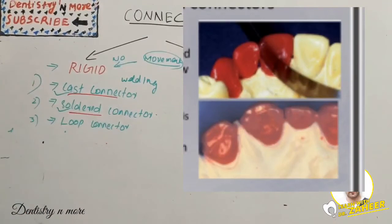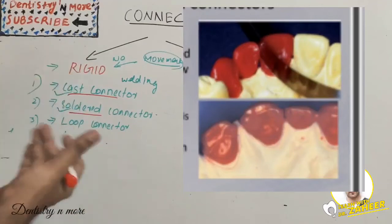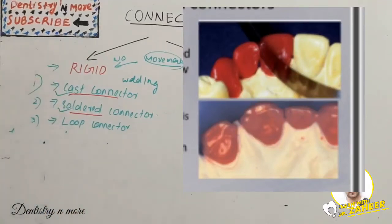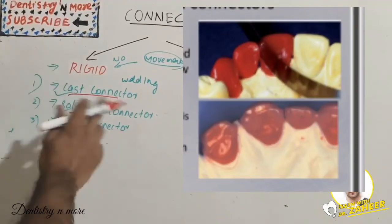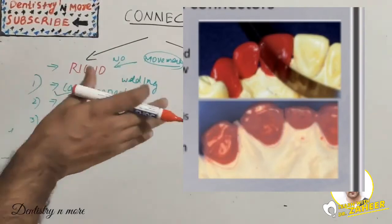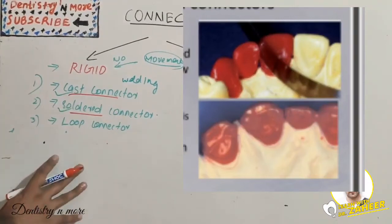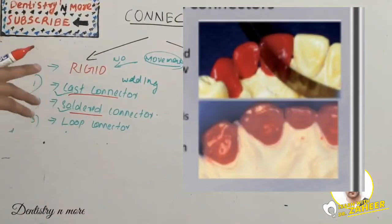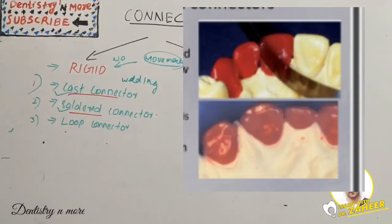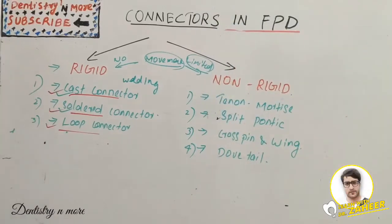In a soldered connector, the metal is not melted during soldering but must be thoroughly wettable by the liquefied solder. Dirt or oxides on connector surfaces can reduce wetting and hamper successful soldering. The wax pattern is made to final shape and then sectioned with a thin ribbon saw so the surfaces to be joined are flat and parallel, with a controlled distance of 0.25 mm maintained.